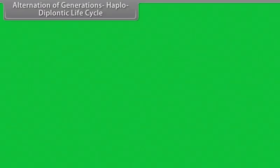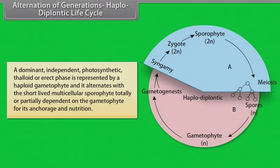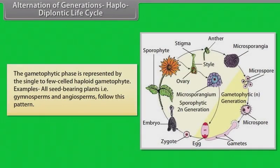Alternation of Generations - Haplodiplontic Life Cycle: A dominant independent photosynthetic thalloid or erect phase is represented by a haploid gametophyte and it alternates with the short-lived multicellular sporophyte totally or partially dependent on the gametophyte for its anchorage and nutrition. The gametophytic phase is represented by the single to few-celled haploid gametophyte. Examples include all seed-bearing plants, that is Gymnosperms and Angiosperms, which follow this pattern.